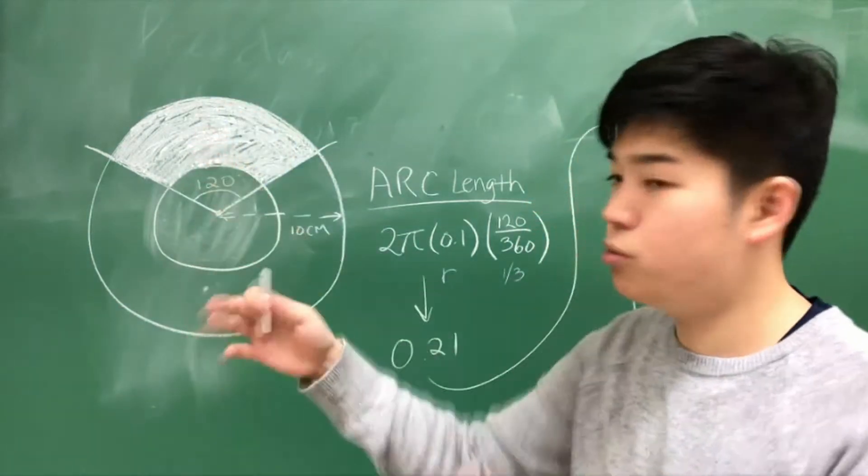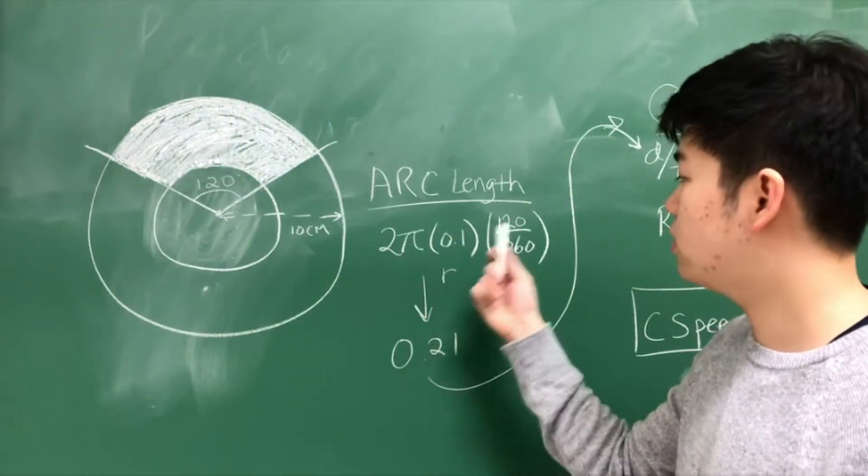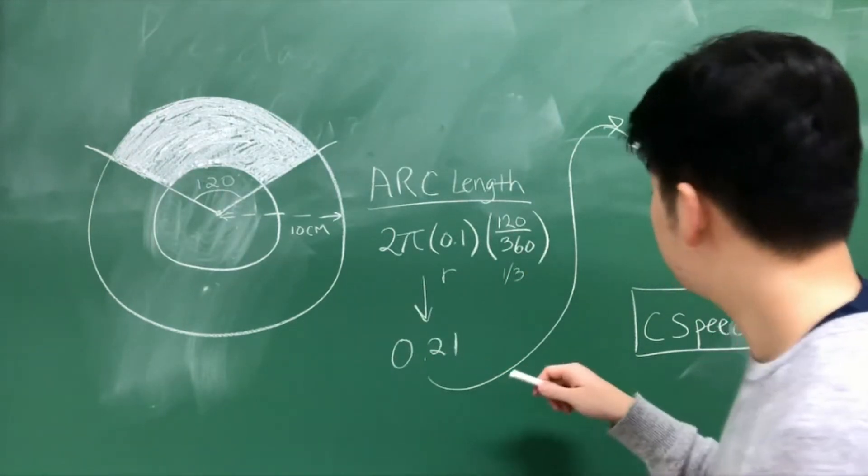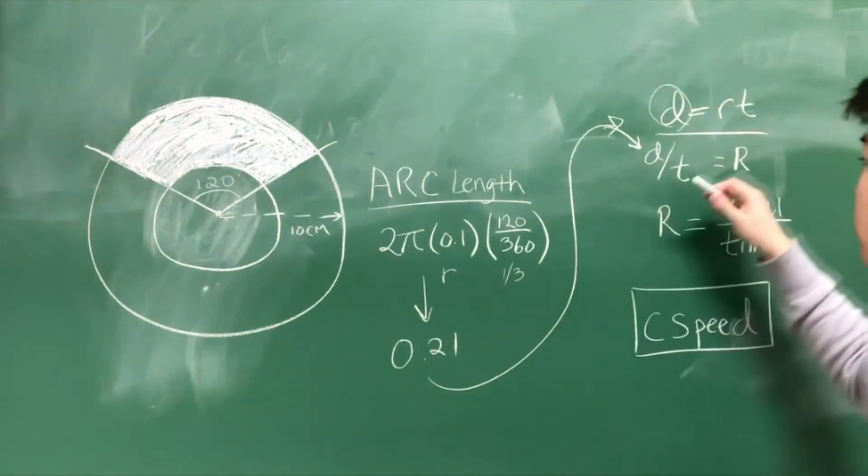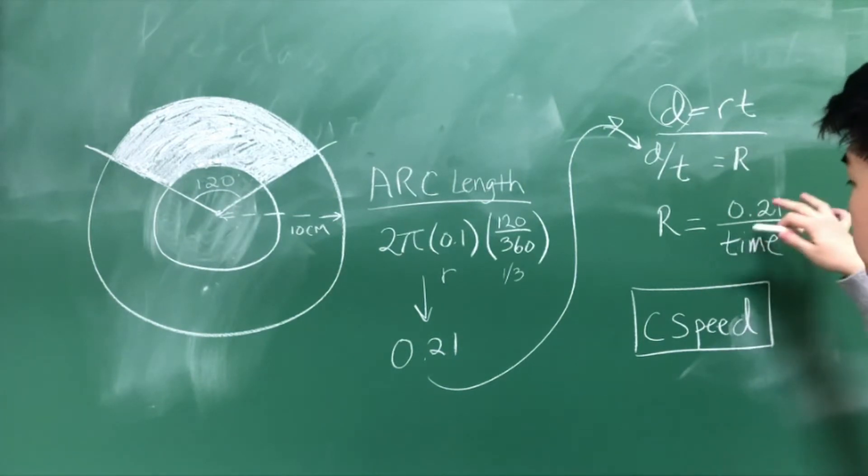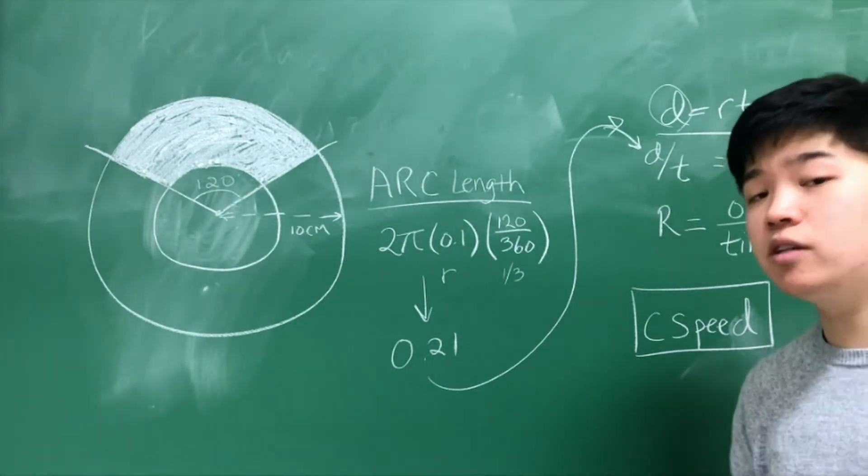We calculate the length of the arc, which would be the distance plugged into the equation. We get that 2πR times 120 divided by 360, which roughly gives about 0.21. So this 0.21 then gets plugged into the d equals RT equation, and we isolate R by doing 0.21 divided by time. The time will constantly change and will be reset every five iterations.